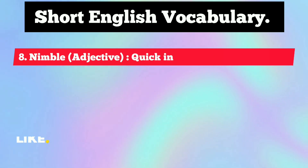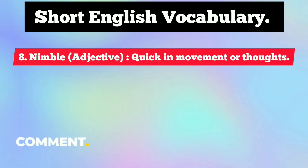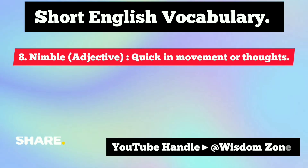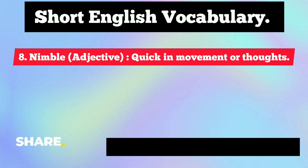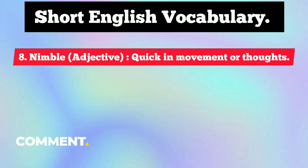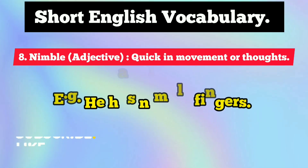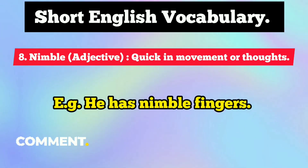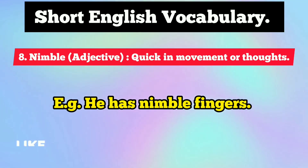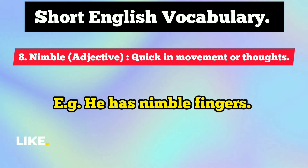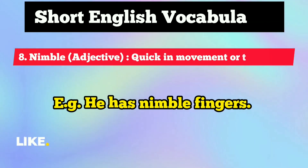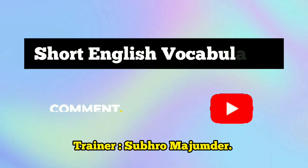The last short English vocabulary word is 'nimble.' It is an adjective and it means quick in movement or thoughts. Another synonym is 'agile.' For example: 'He has nimble fingers,' meaning his fingers are quite quick in movement — swift. That's called nimble fingers.